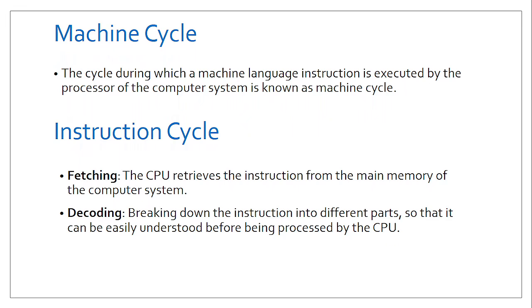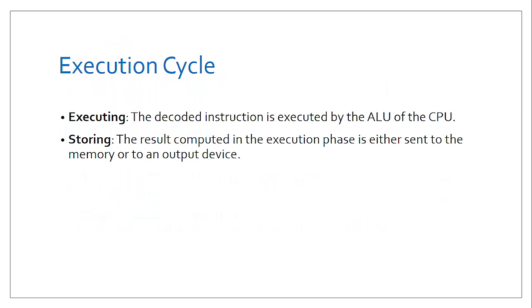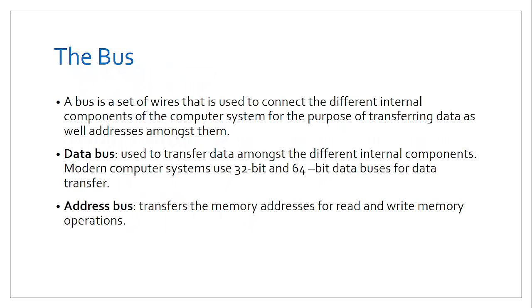To process instructions effectively, the CPU converts all characters into ones and zeros. After that, it undertakes the fetch-execute cycle: it fetches instructions from main memory, breaks them down into a language it understands, then executes them. Finally, it decides whether to store or display the results — for example, displaying typed characters in a word document or saving them to the hard disk.